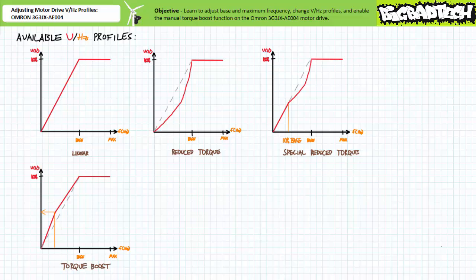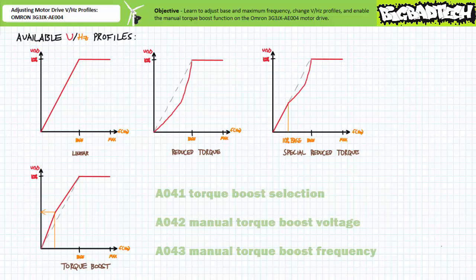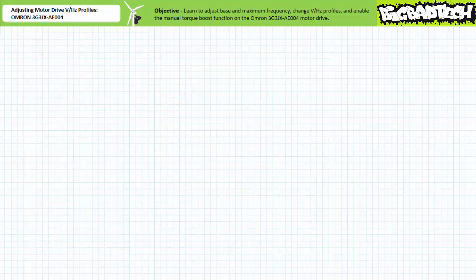To enable manual torque boost, an operator needs to check three parameters. Extended function parameter A041, torque boost selection, has two options: 00, the default, manual, and 01, automatic. Extended function parameter A042, manual torque boost voltage, is user adjustable from 0 to plus 20 percent. When set at 0 percent you've effectively got an unmodified purely linear volts per hertz profile; when you increase this setting you effectively put a dual slope kink in the volts per hertz profile. Extended function parameter A043, manual torque boost frequency, is user adjustable from 0 to 50 percent of base frequency — this is the frequency at which the knee in the dual slope occurs. Let's enable the torque boost function and call it a day.